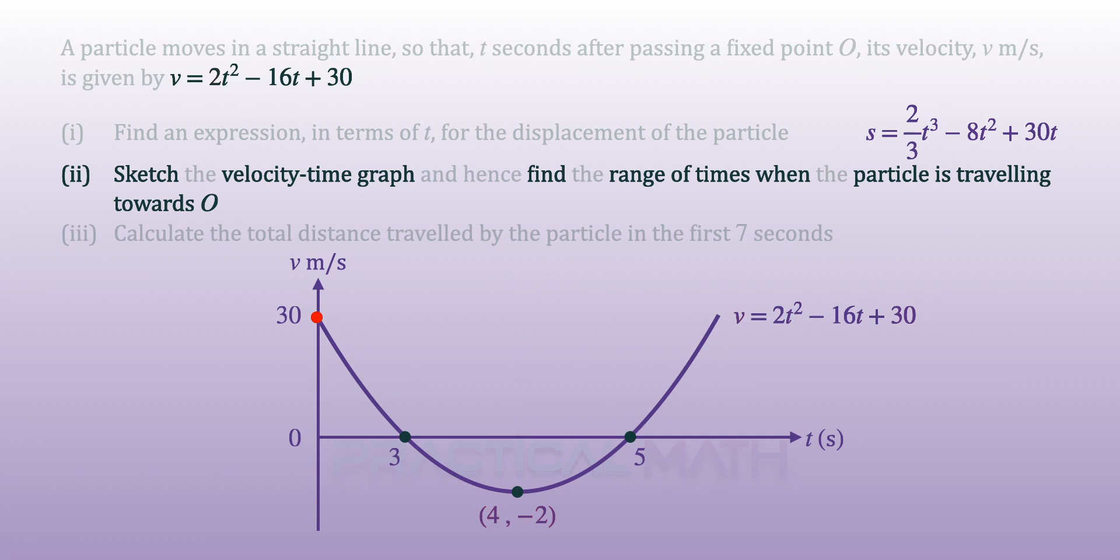Because the particle starts off t seconds after passing a fixed point O, at this point the particle must be moving away from O. At t equals 3, velocity is 0, implying that there is a change of direction, also known as instantaneous rest, so the particle must be moving towards O. The range will begin when t is greater than 3.